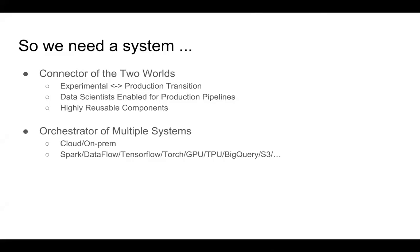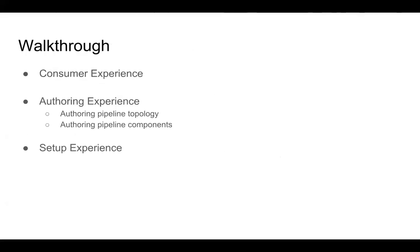We also need a system to act as an orchestrator across multiple systems. There are existing efforts in Spark, Dataflow, and Airflow — a lot of ML users use Airflow for machine learning orchestration. But I think we need an orchestrator that spans across multiple environments including cloud and on-prem, and also connects Spark, Dataflow, TensorFlow — all these kinds of technologies. It's like an uber orchestration system. Today I'm going to do a quick walkthrough of the experience we provide.